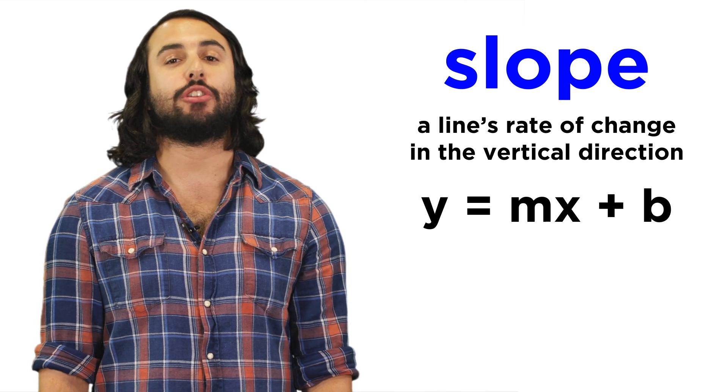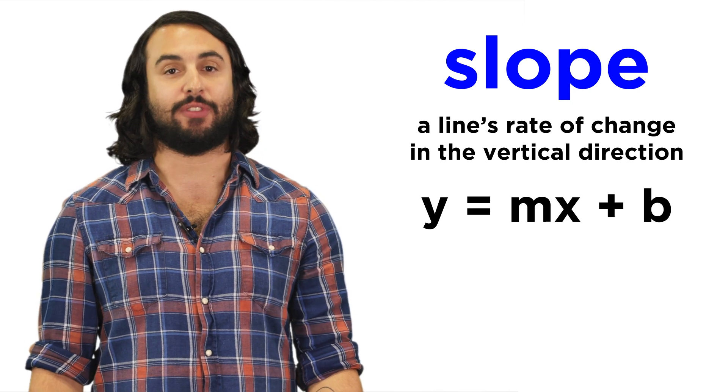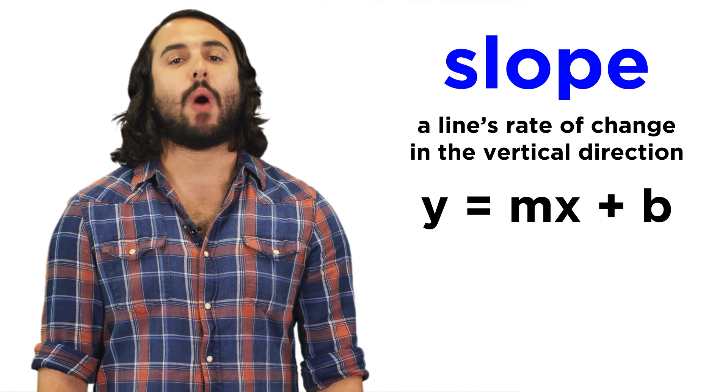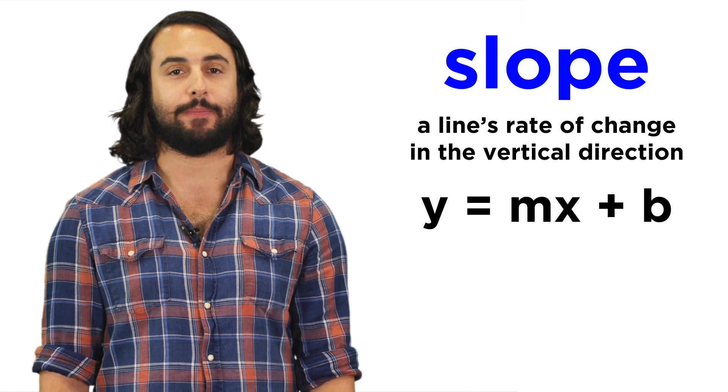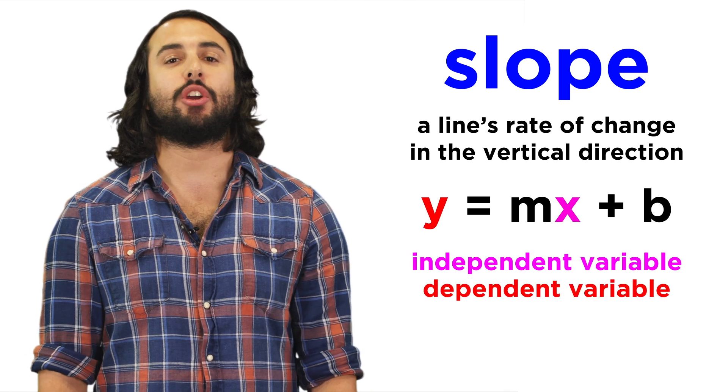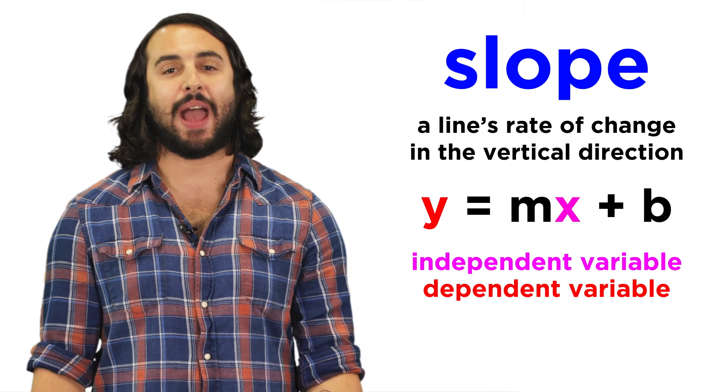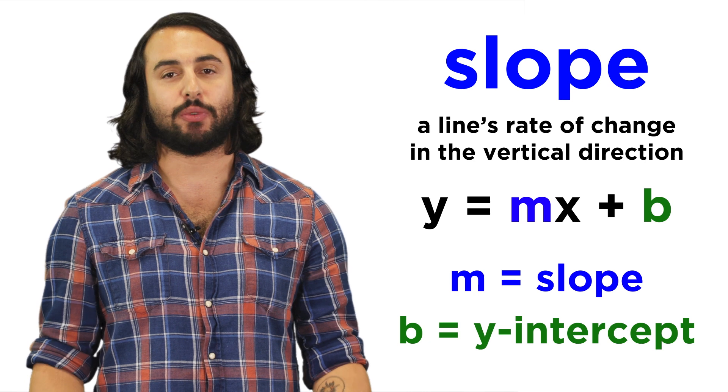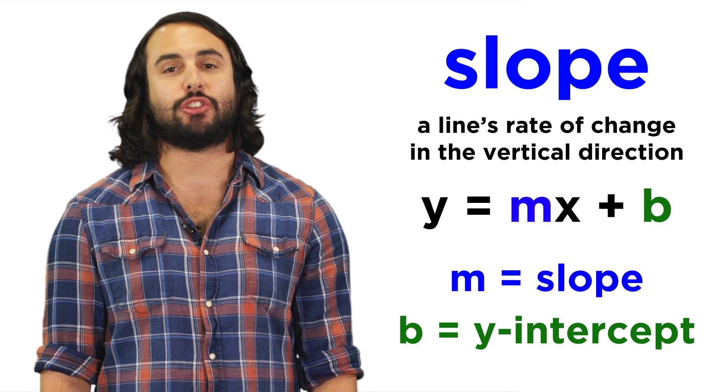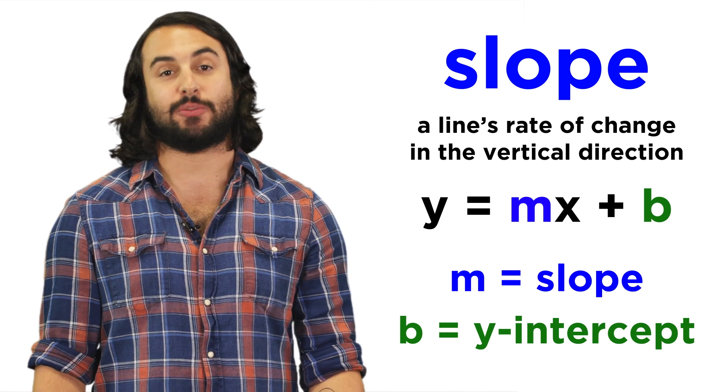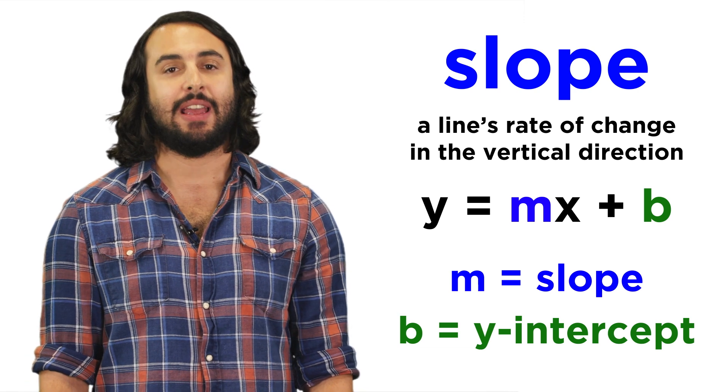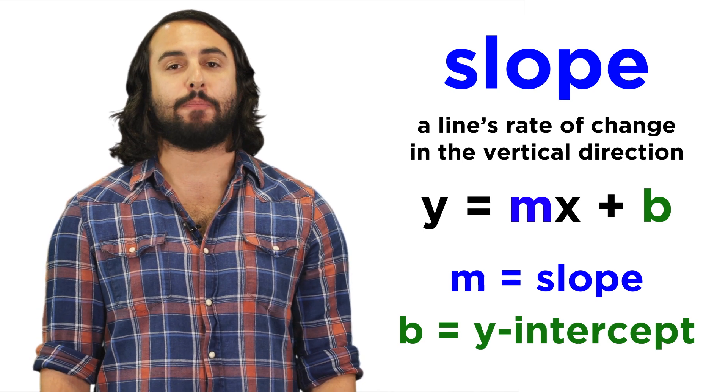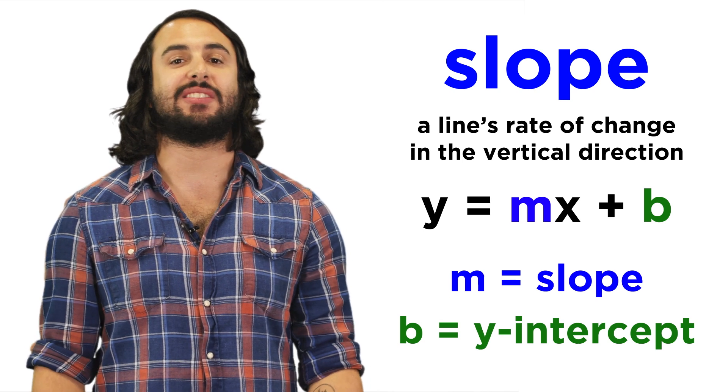To understand how the slope of a line relates to the equation of the line, let's introduce a common form for linear equations, y equals mx plus b. We already know about x and y, these are the independent variable and dependent variable respectively, but these other two terms represent characteristics of the line. M represents the slope of the line, which is essentially how steep the line is, and b represents the y-intercept, which is the y-coordinate for the point where the line crosses the y-axis.